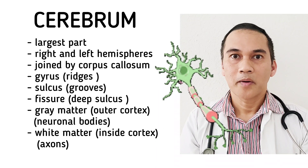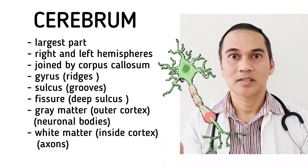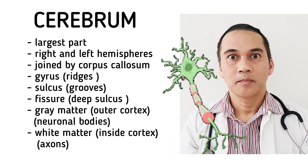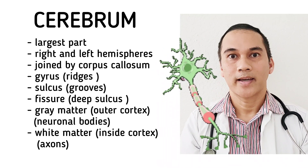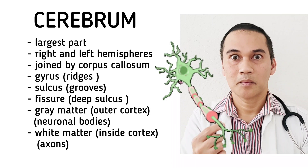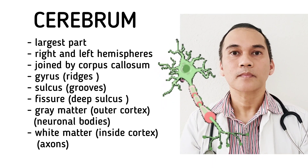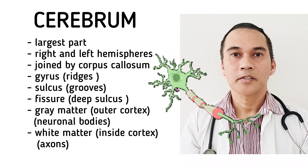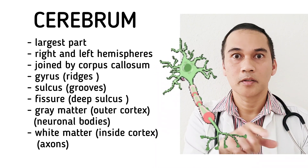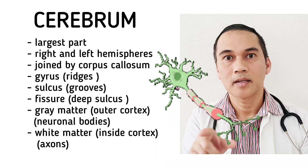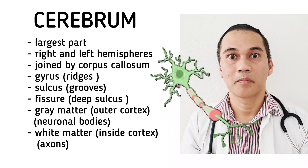The white matter, which is the axon, is called white because in section it looks white due to fat. It is a myelinated axon, and it is responsible for communicating between the gray matter of the brain and the rest of the body.